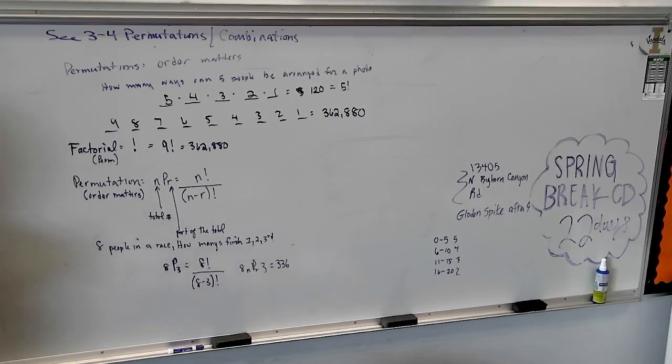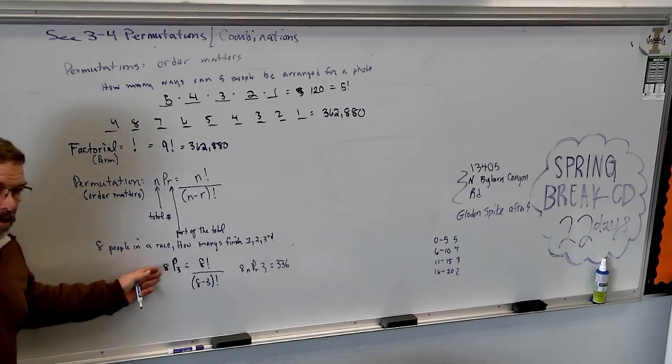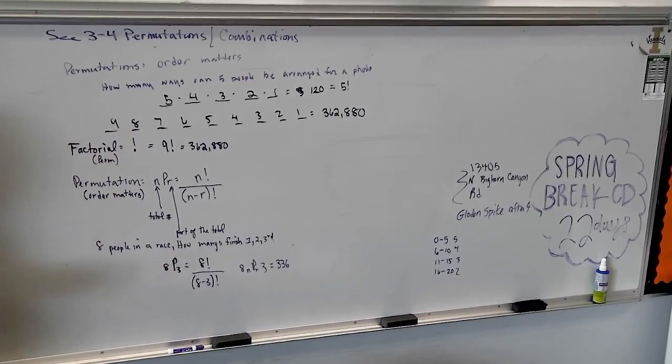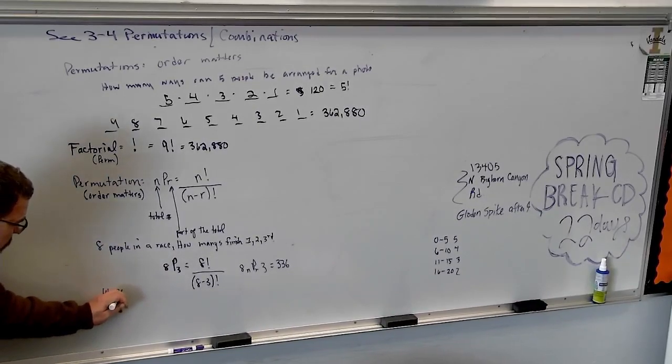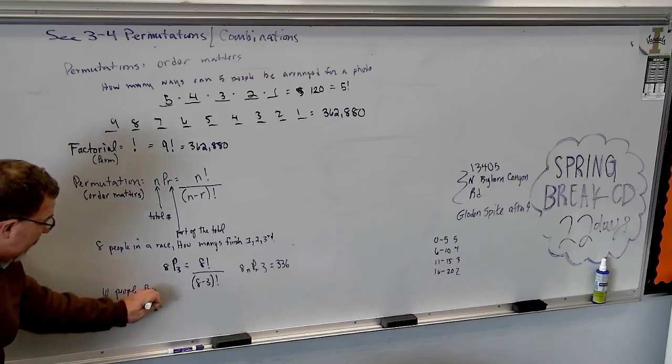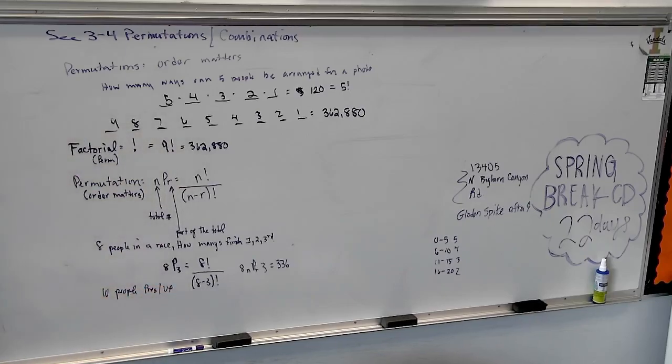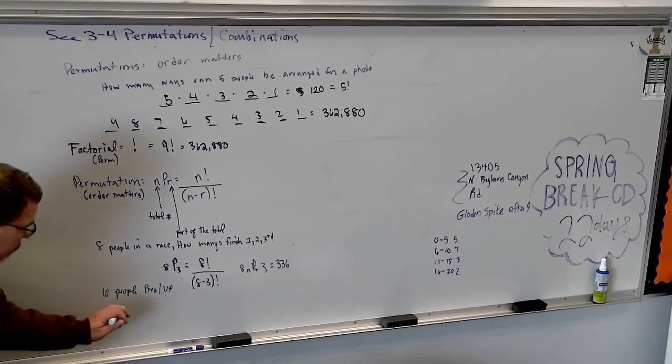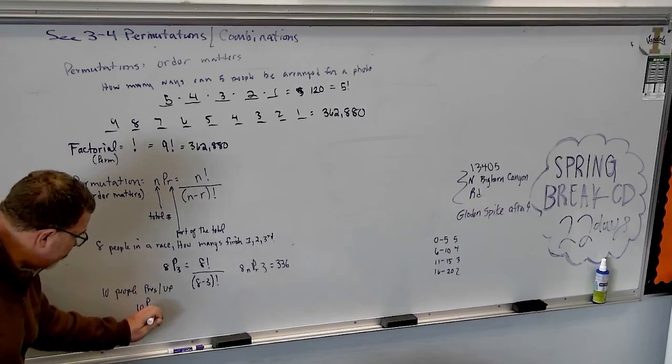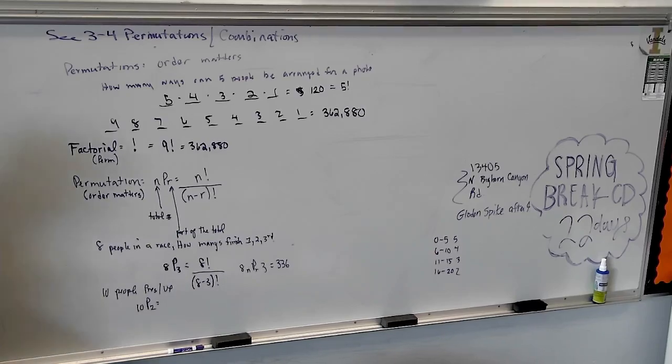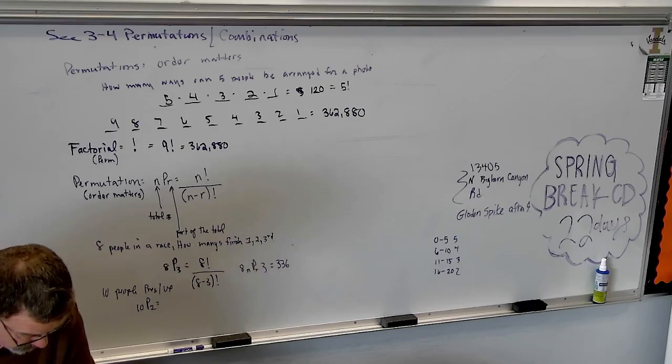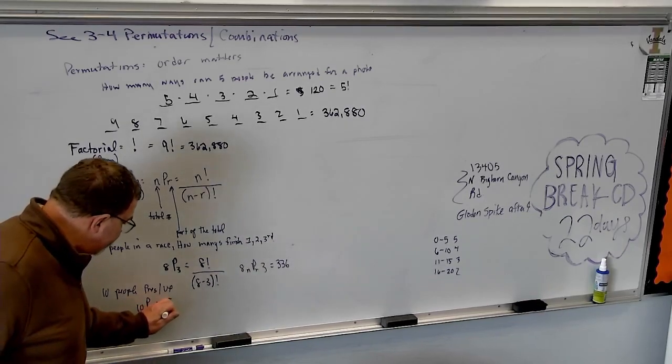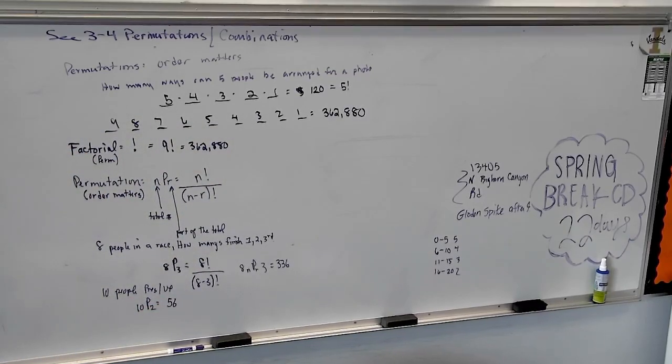Maybe I get first, second, third. Maybe the next race, I get second, first, third. I mean, there's so many different combinations that can happen. Order matters. Here's another one that a lot of people kind of struggle with. If I have ten people, and I need to select a president and a vice president. Does order matter here? Yes. I'm selecting a president. Then once I select him, he's done. And now I select a vice president. So this would be ten permutation two.